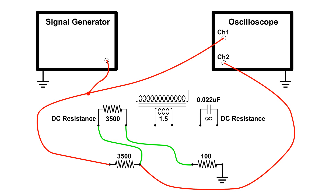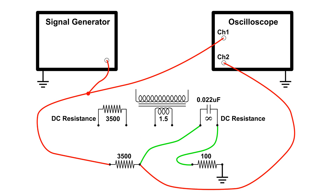I'm going to vary the frequency, then connect those leads to the coil and vary the frequency, and then the capacitor — again varying the frequency — to see what happens to the impedance of each one of those components.